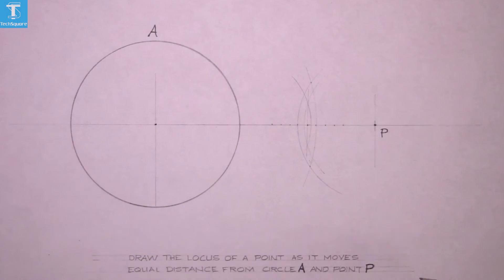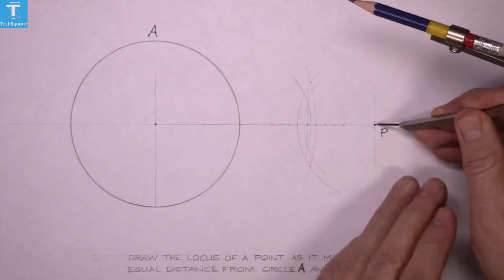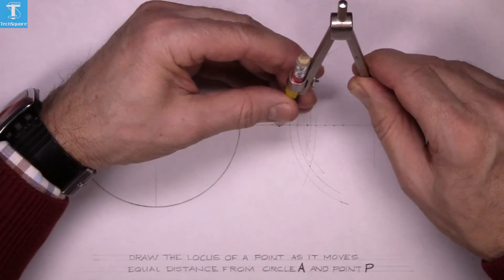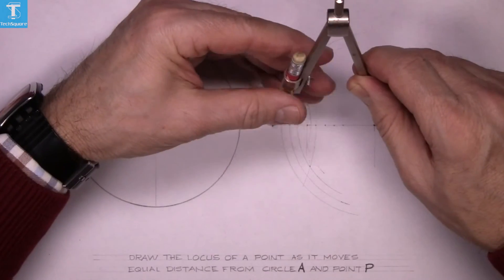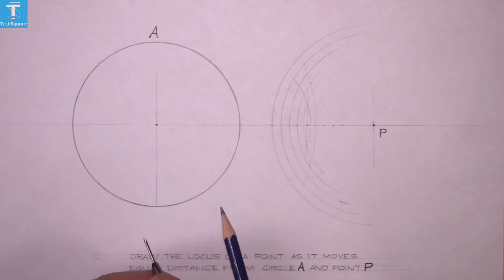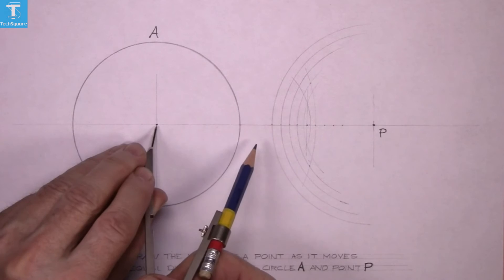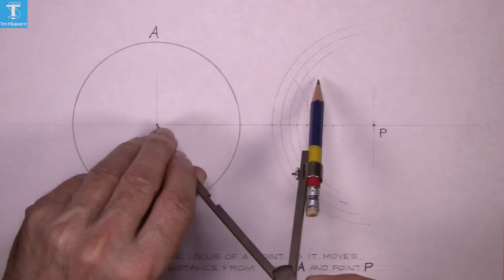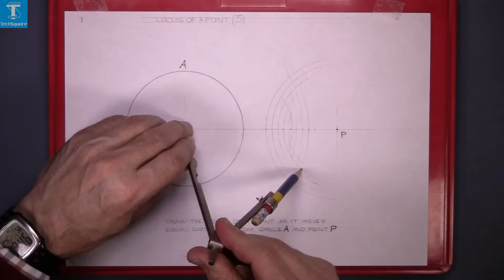And then using your compass draw your arcs, and with this time we'll draw the three arcs together to speed up the process. Change your center to the center of the circle and draw the other three arcs.